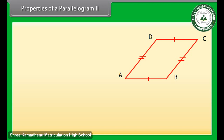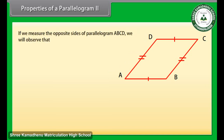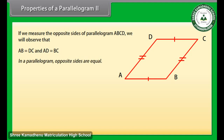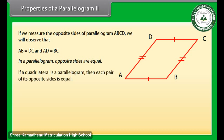Properties of a parallelogram 2. Now we know that a diagonal divides the parallelogram into two congruent triangles. If we measure the opposite sides of parallelogram ABCD, we will observe that AB is equal to DC and AD is equal to BC. This is a property of a parallelogram — it says that in a parallelogram, opposite sides are equal. This theorem can also be stated as: if a quadrilateral is a parallelogram, then each pair of its opposite sides is equal.